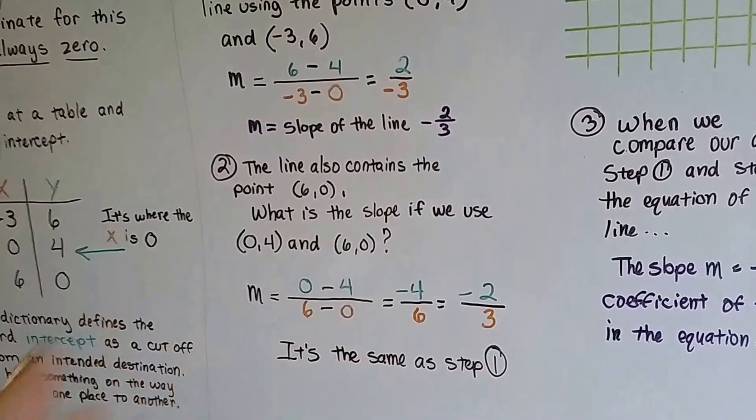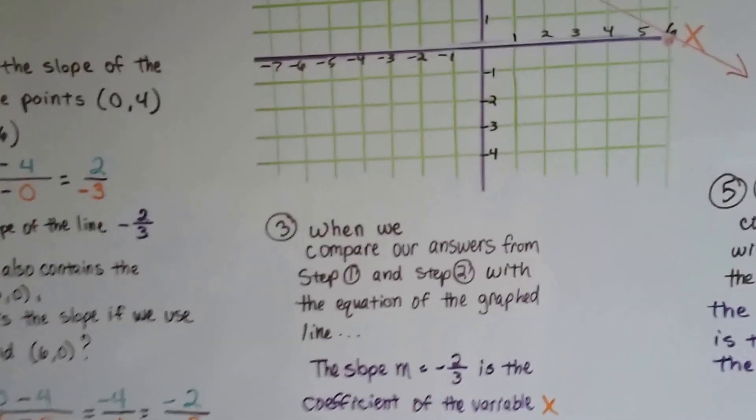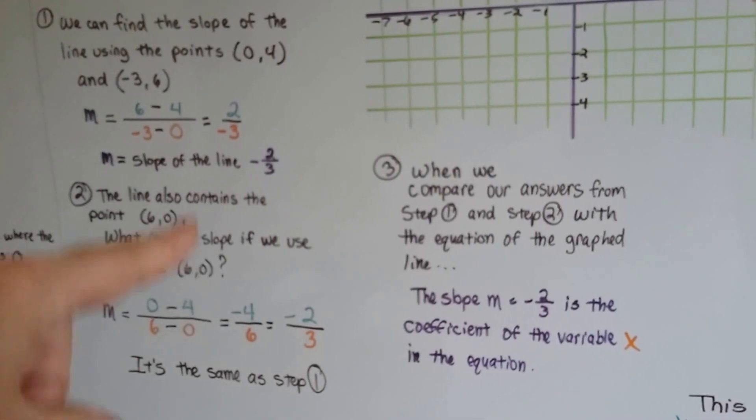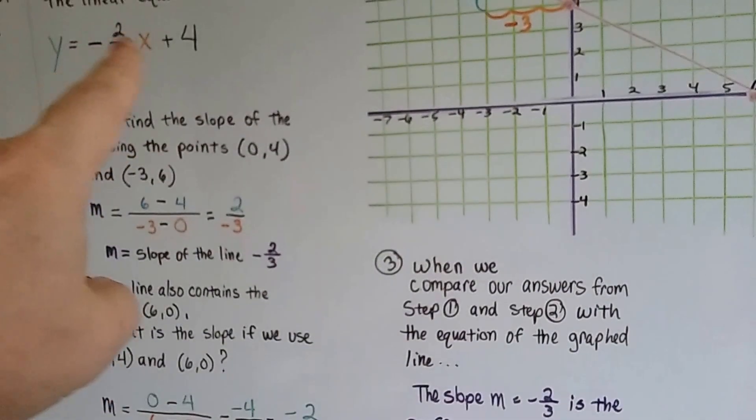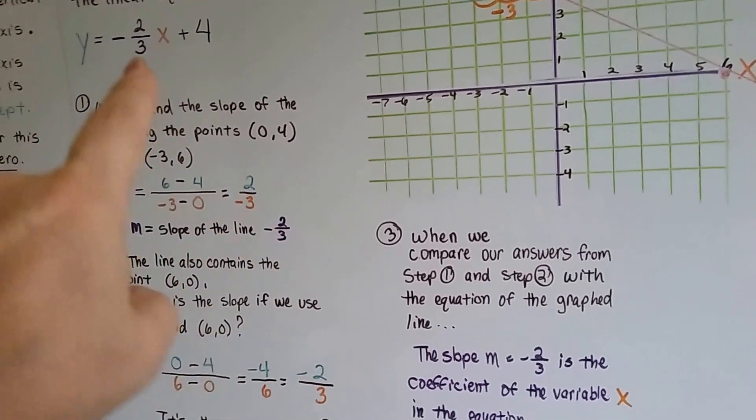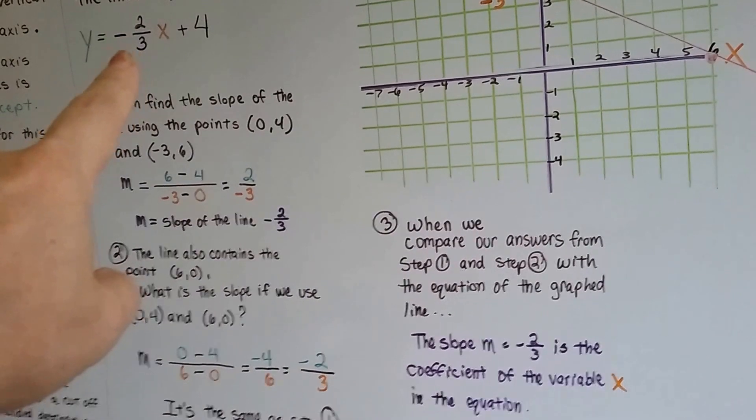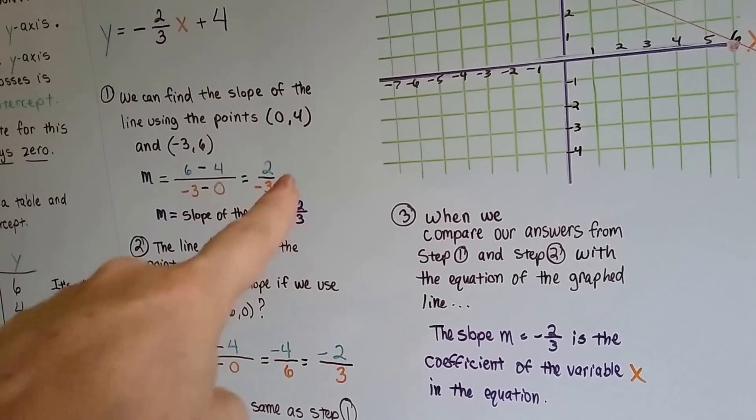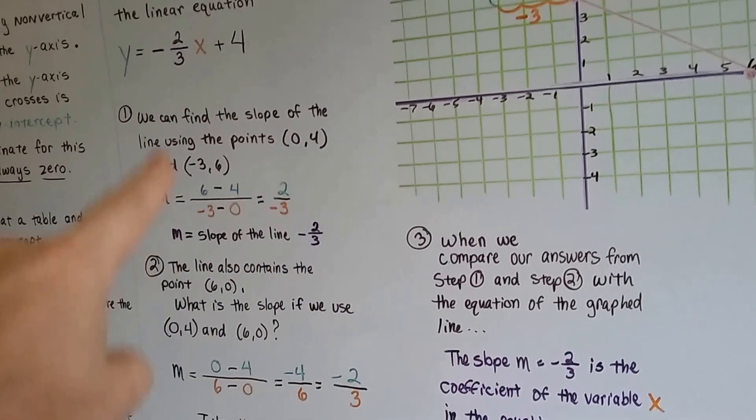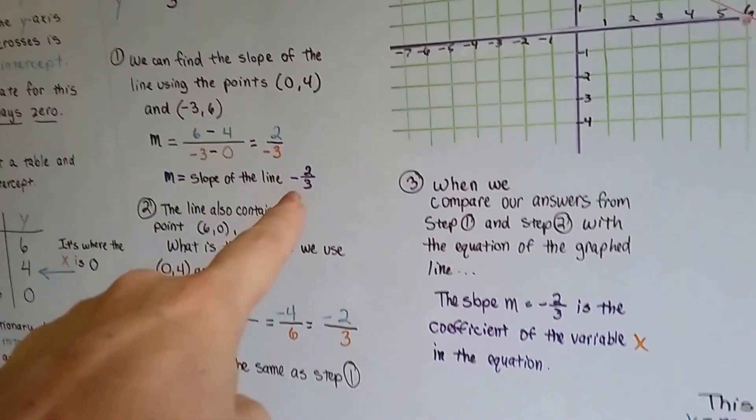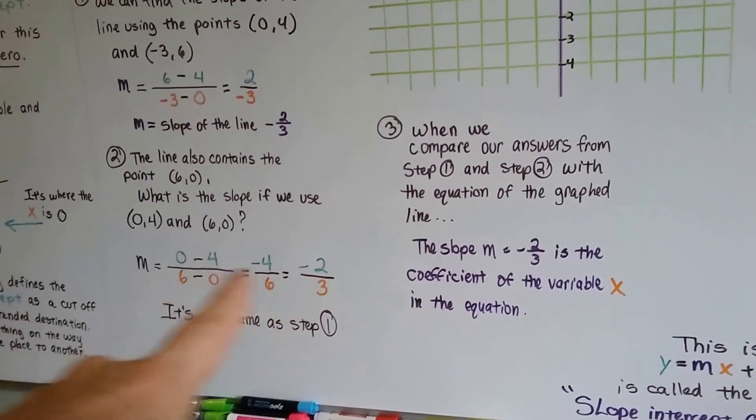Well, because the negative 2 thirds is a constant. Well, when we compare our answers from step 1 and step 2 with the equation of the graphed line, the slope, negative 2 thirds, is the coefficient of the variable x in this equation. But we knew that. We knew that that negative 2 thirds stood for m, and m is the slope. And see how we got the slope after we did this?